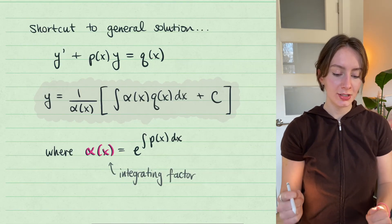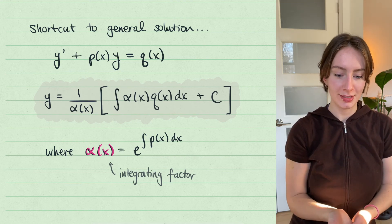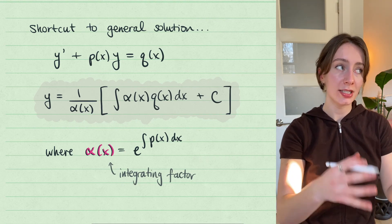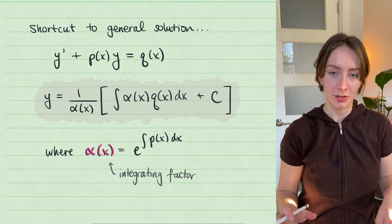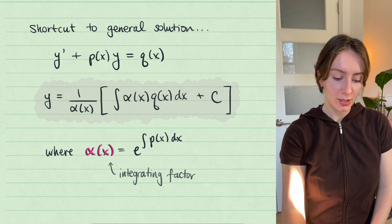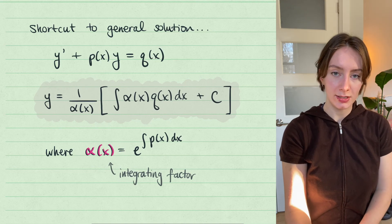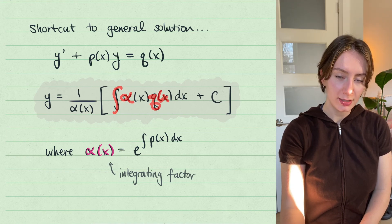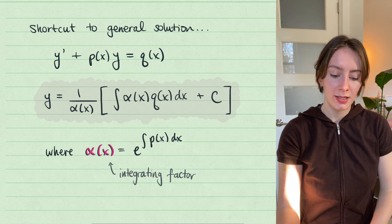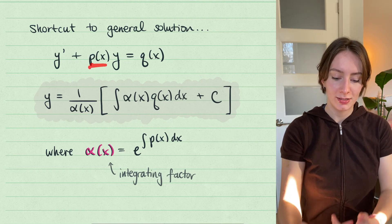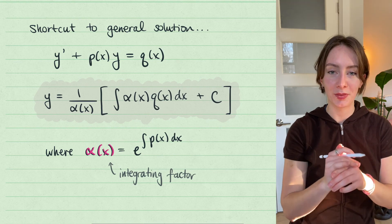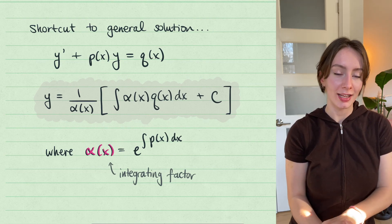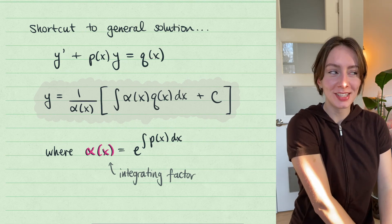There is a shortcut: if your equation is in standard form, the general solution y is always given by 1 over your integrating factor, times the integral of your integrating factor times q(x), plus c — where your integrating factor is e to the integral of p(x), the coefficient function on y. That's the integrating factor method to solve first order linear differential equations. I really hope this was helpful, and if you have any questions, post them in the comments. Thanks so much for watching!